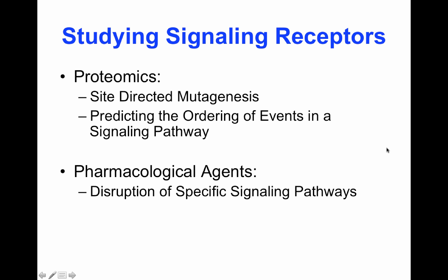How do we know about these pathways? We have known them by studying signaling receptors through two different ways. First, we can study them by proteomics using site-directed mutagenesis, which allows us to inactivate a domain and by inactivating that domain, fine-tune and understand which domain of the protein activates which part of the signal transduction pathway. Alternatively, we have a pharmacological agent library that allows us to block signal transduction pathways by inhibiting specific molecules — similar to how we have used certain toxins to inhibit pathways earlier in the Krebs cycle or signaling from neurons.